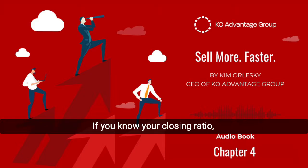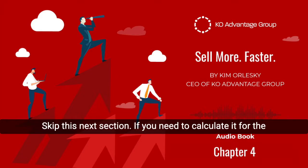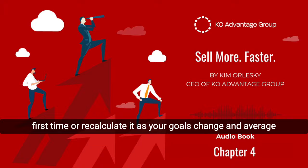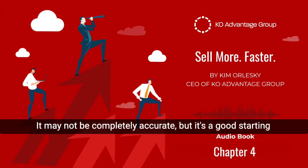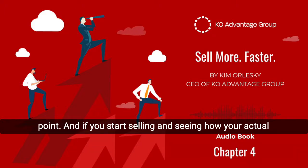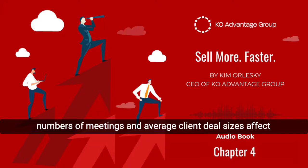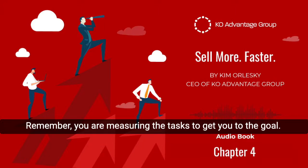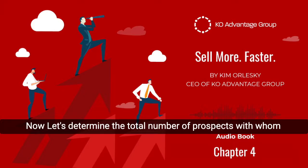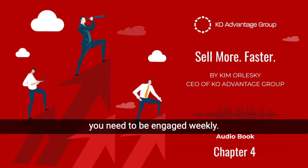If you know your closing ratio, great — skip this next section. If you need to calculate it for the first time, or recalculate it as your goals change and average client value increases, I prefer using the simple method. It may not be completely accurate, but it's a good starting point. And if you start selling and seeing how your actual numbers of meetings and average client deal sizes affect your goal results, make slight adjustments. Remember, you are measuring the tasks to get you to the goal. Now let's determine the total number of prospects with whom you need to be engaged weekly.